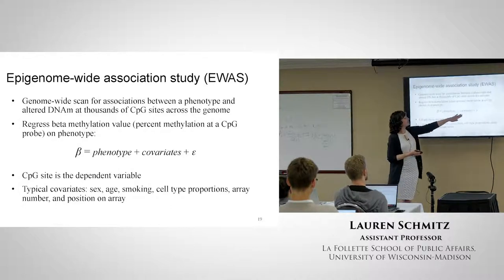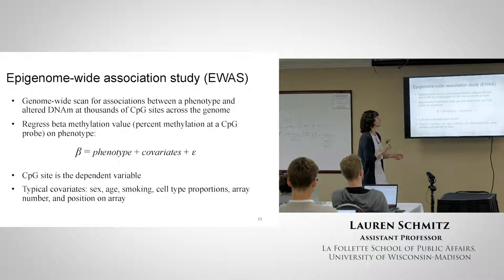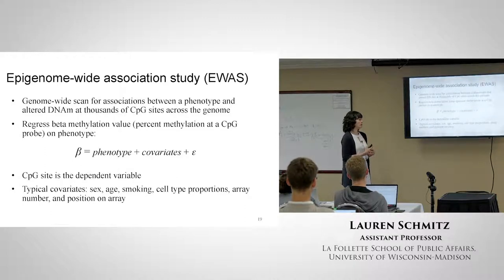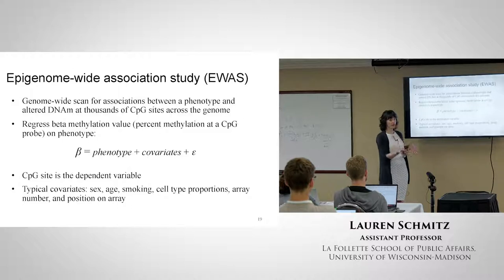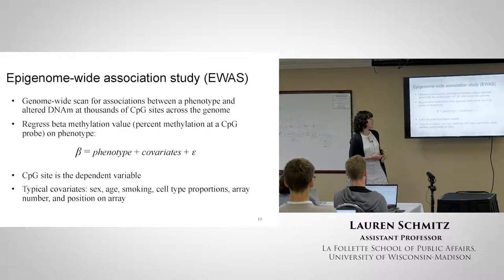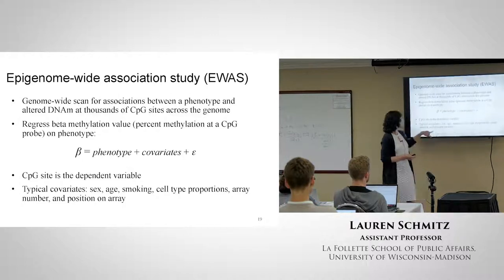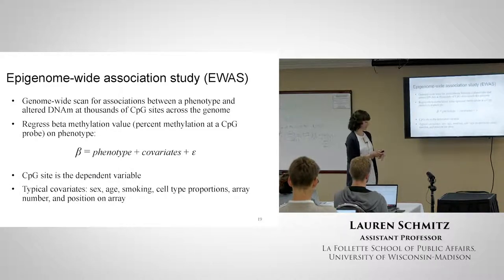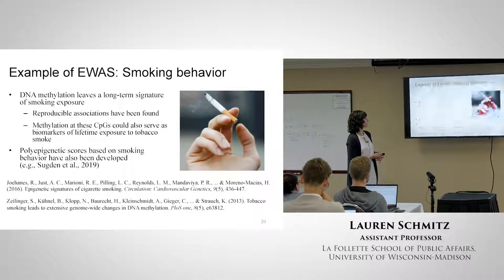The typical covariates in an EWAS - unlike GWAS where we always control for population stratification - in EWAS it's usually sex and age, because those are two really huge drivers of methylation patterns. Females have very different methylation than men, especially because of the X chromosome, and methylation patterns change a lot with age. Smoking is a huge one - it's really been shown to change and alter the methylome. And then cell type proportions, array number, and position on array are usually controlled for batch effects that might confound the analysis.